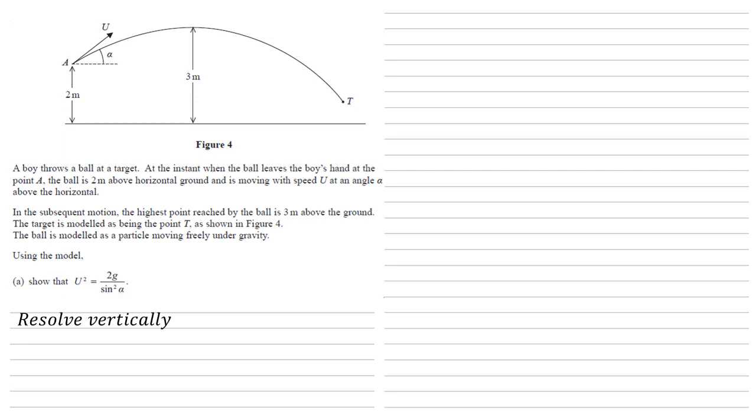So we're going to resolve vertically. We're going for that direction because there's quite a lot of information we can take from this. We know that U is equal to U sine alpha. A is going to equal a deceleration caused by gravity, so minus G. It's a minus because it's going in the opposite direction to the velocity. The velocity is going upwards, the acceleration is going downwards.